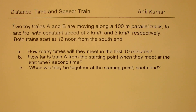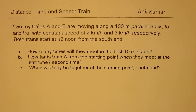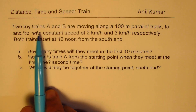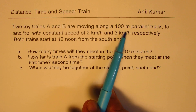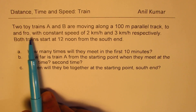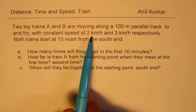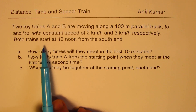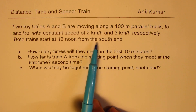I'm Anil Kumar, welcome to my series on distance, time and speed. We have taken a few examples based on trains. Here's a very interesting case where we will see when two trains will meet when going to and fro between two points. Two toy trains A and B are moving along a 100-meter parallel track, to and fro, with constant speeds of 2 km/h and 3 km/h respectively. Both trains start at 12 noon from the south end.